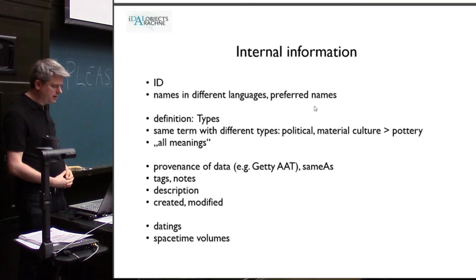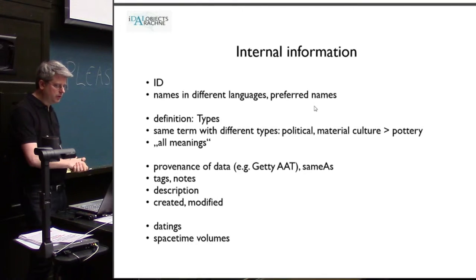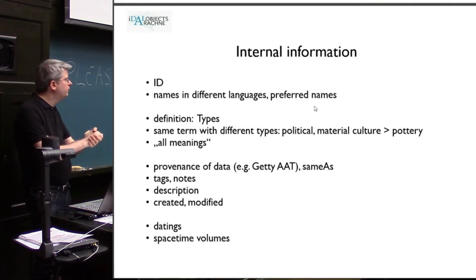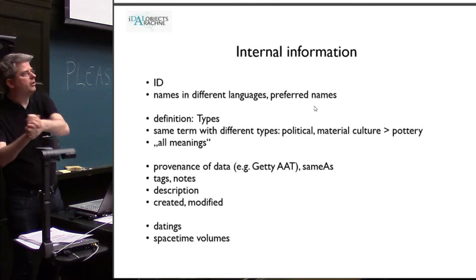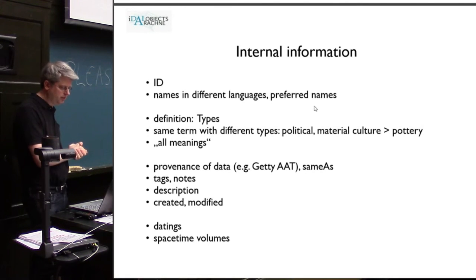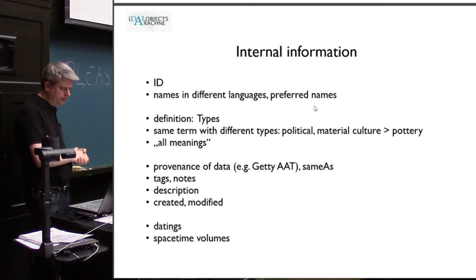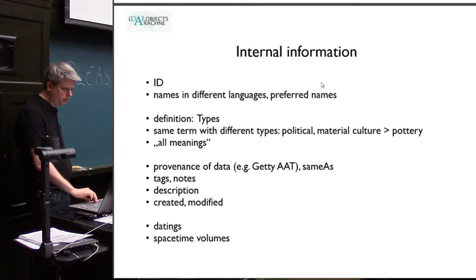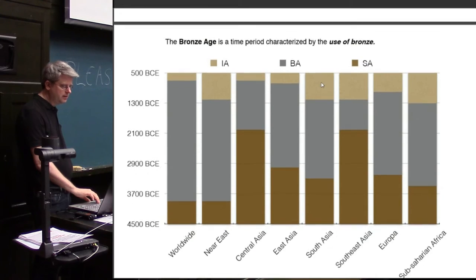We have provenance of data — Getty is actually a short-form provenance, but of course Getty has its information from somewhere, so we also record the original definition if we have that information. And there are a few other standard fields, plus date information and space-time volume information.